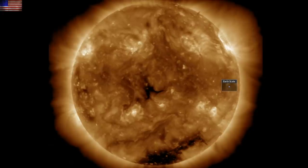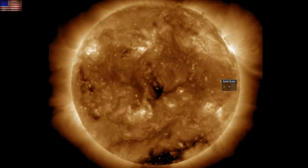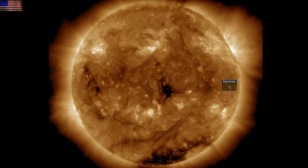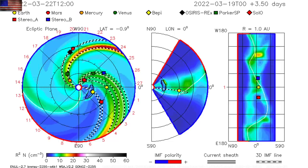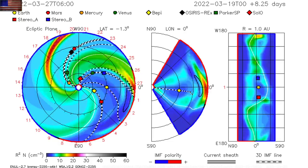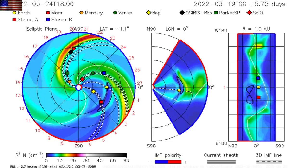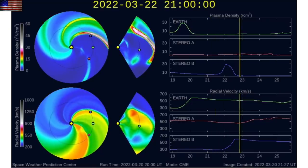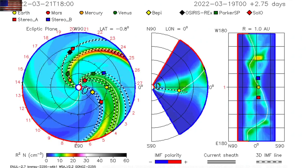After the CME we had off the north yesterday, we find not a lot of activity on the earth-facing half. Both enlil spirals are updated and both suggest sluggish speed and a sparse plasma cloud. They don't foresee impact until Wednesday, and I doubt it will even register in the solar wind.